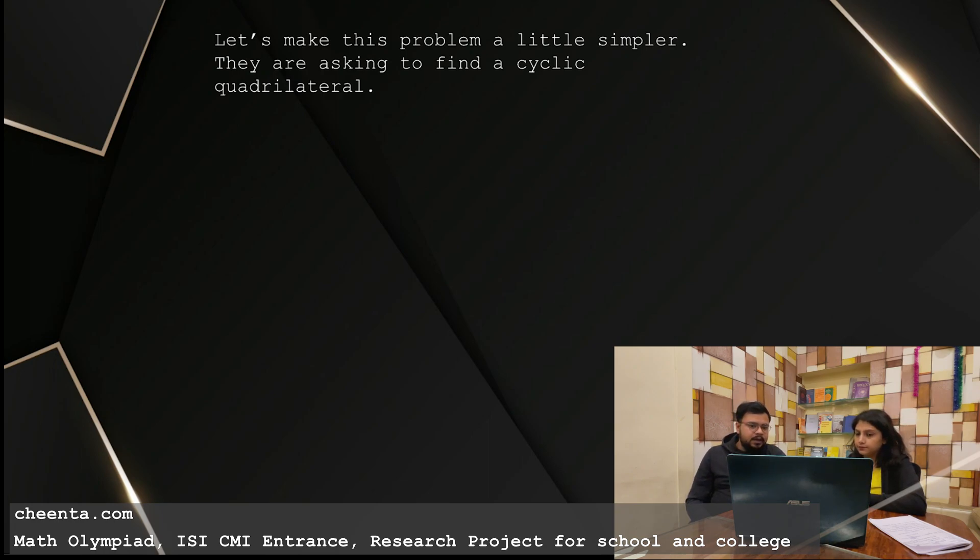To make this problem simpler, we need to understand what is a cyclic quadrilateral. So cyclic quadrilateral is a quadrilateral where all of the four vertices will lie on a circle. But there are some specific properties of a cyclic quadrilateral. If you see the opposite angles, their sum has to be 180 degrees. The opposite pair of the angles will sum up to 180 degrees. That is one of the properties of cyclic quadrilateral.